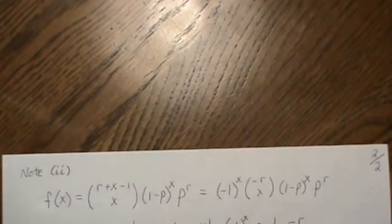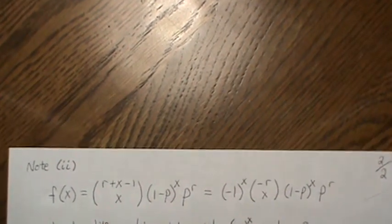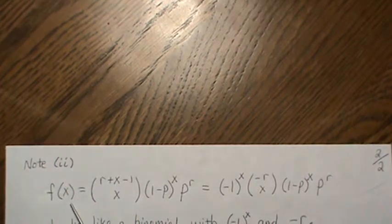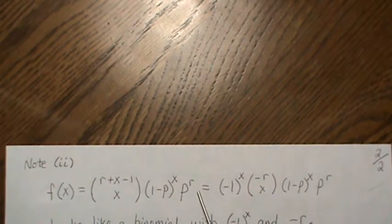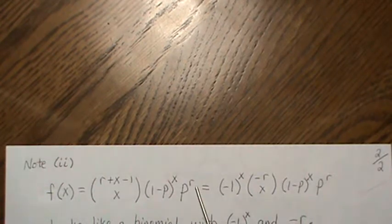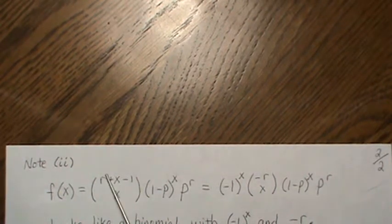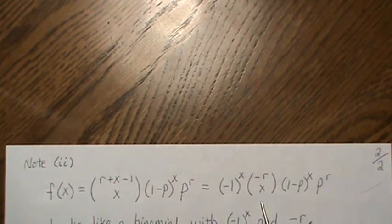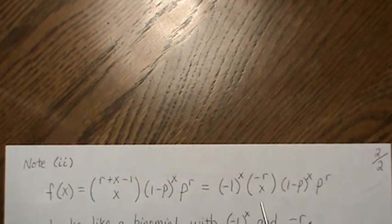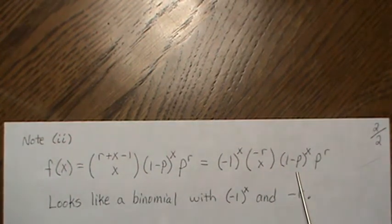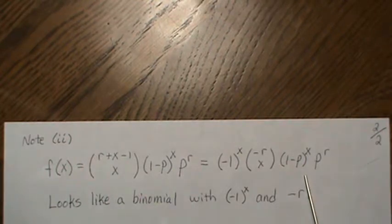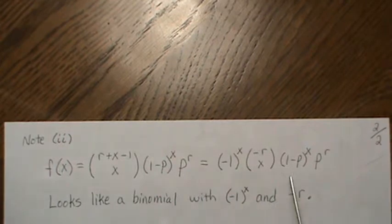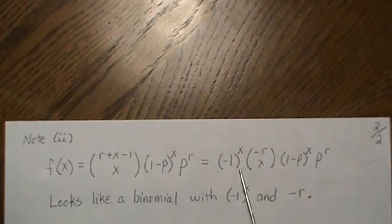Now let's look at the density, the probability mass function for a negative binomial. We said it was this, and then based upon note one, this combinatorics can be written like this. So when we plug this into the formula, then this looks like a binomial but it has a negative piece here and the negative r there. And that's why they call it a negative binomial.